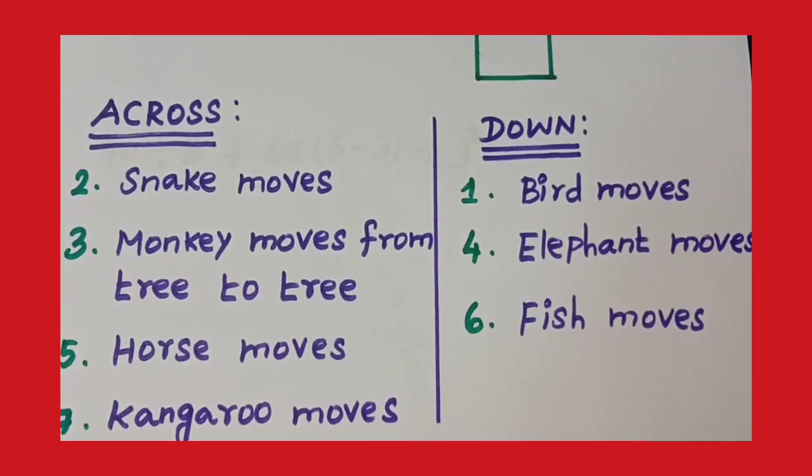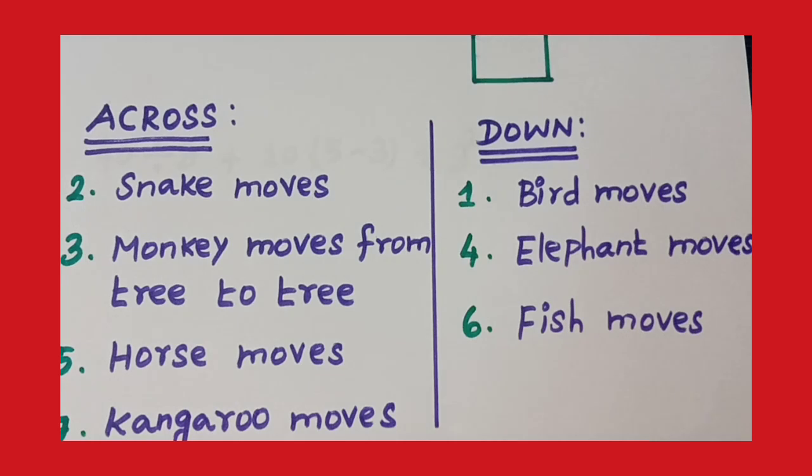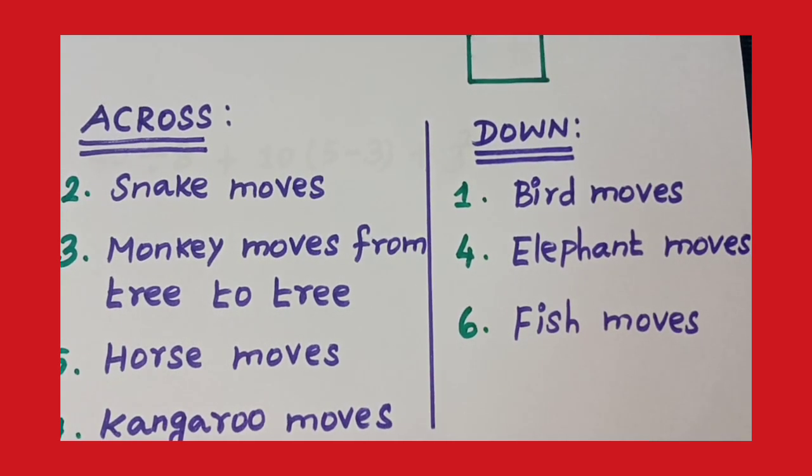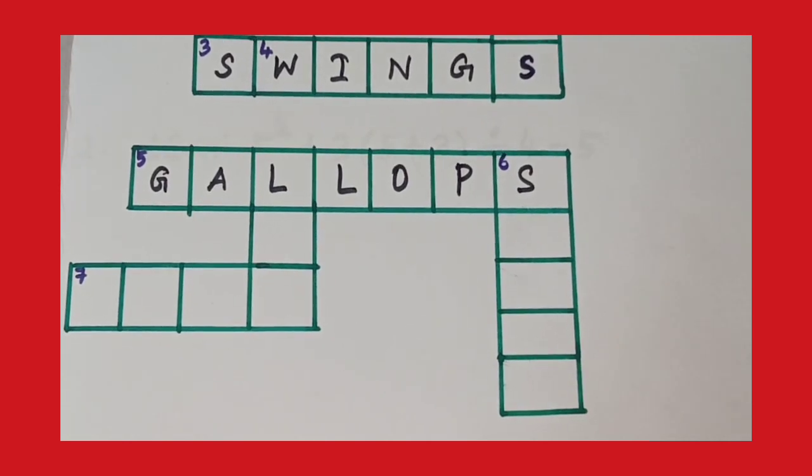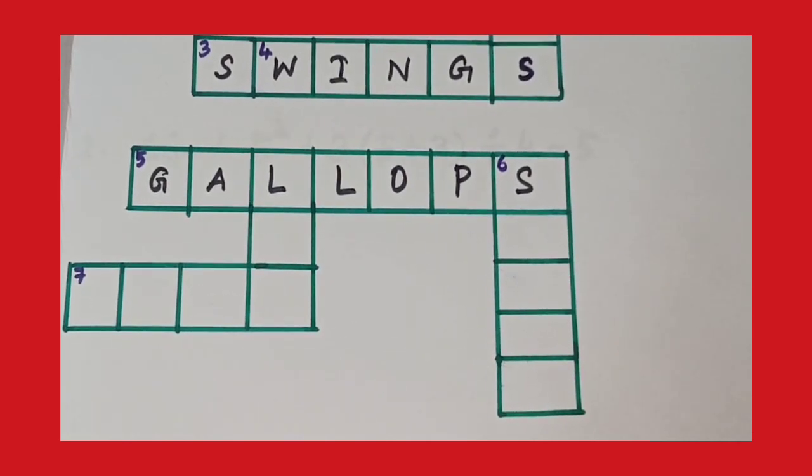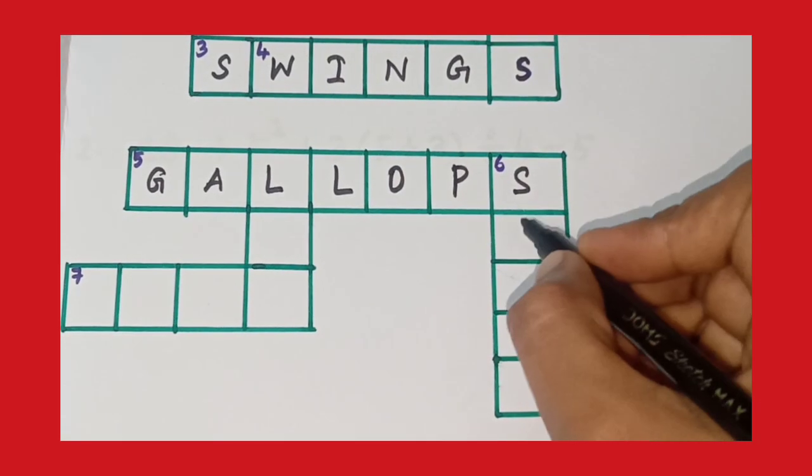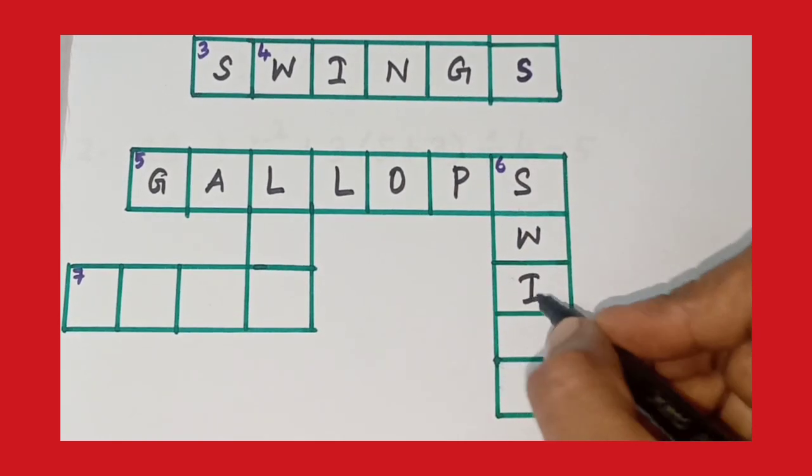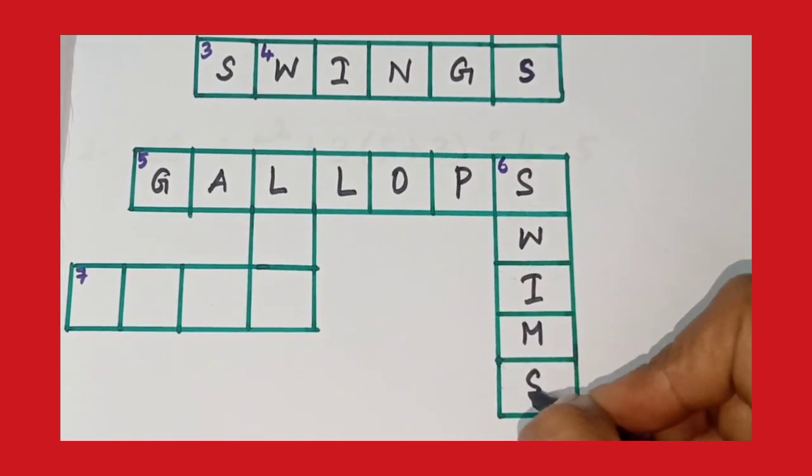And sixth one, fish moves. Fish moves. The clue is down. Fish moves down: swims. S-W-I-M-S. Swims.